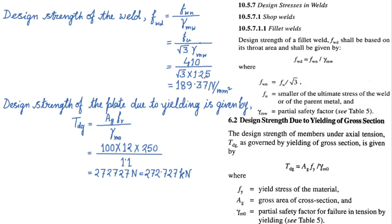Next, design strength of the weld. The design strength of the weld is calculated following clause 10.5.7.1.1 from IS 800 2007. As I already told in my last video, though the formula is valid for only fillet weld as per the given IS code, but this formula for design strength of the weld can be used for any types of weld.